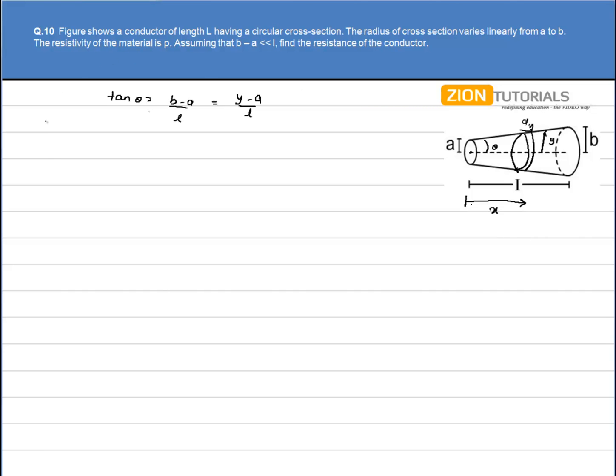So we know that resistance is given by ρL upon area of cross-section. So I can write dR, that is the small resistance of this elementary strip, as ρ into length that is equal to dx, divided by area that is πy².